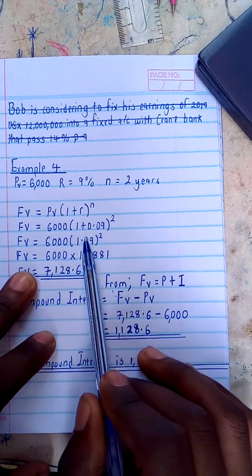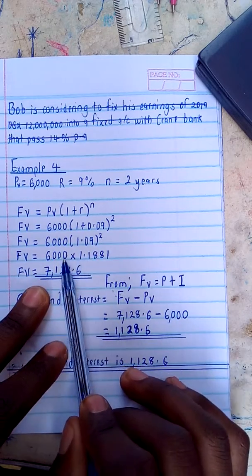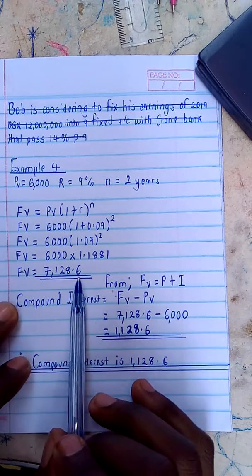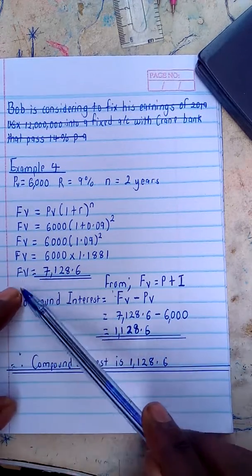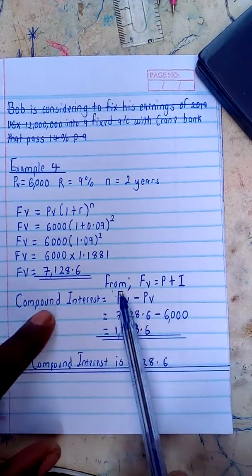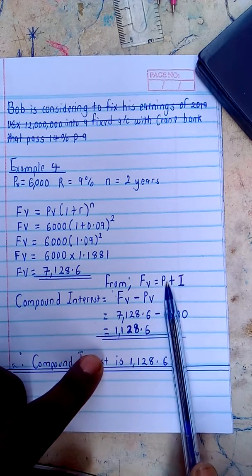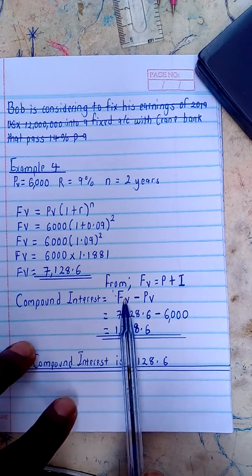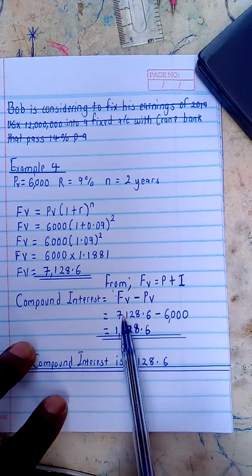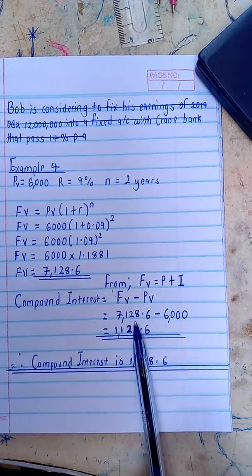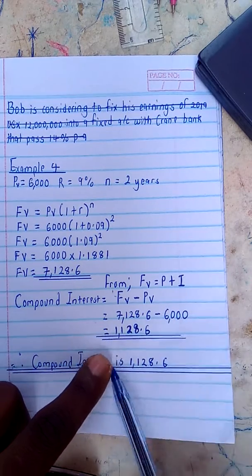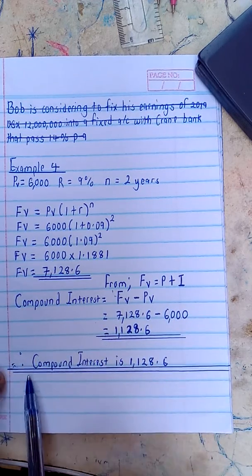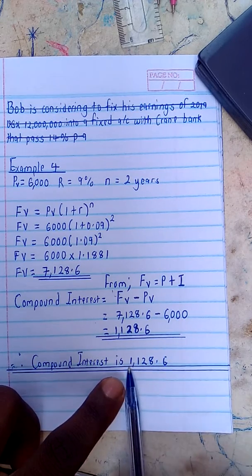Working out the brackets first: one plus 0.09 to the power 2 equals 1.0918 — wait, one point zero nine squared equals 1.1881. So future value equals 6 thousand times 1.1881, giving a future value of 7 thousand, one hundred and twenty eight point six. To find the compound interest, I rearrange: compound interest equals future value minus present value, which is 7128.6 minus 6000, giving compound interest of 1128.6.